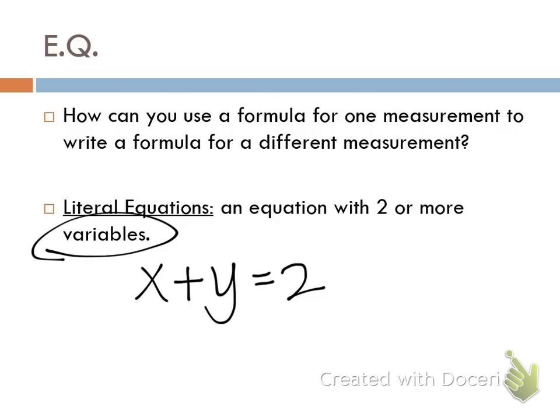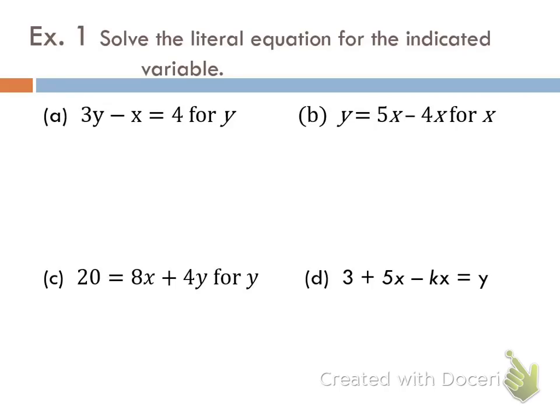As we're working these problems today, we're going to tell you which variable we're going to solve for. So in example number one, it says solve the literal equation for the indicated variable. For letter A, it says 3y minus x equals 4y. The easiest way to do this is to find the term that has the variable you're trying to solve for and circle it.